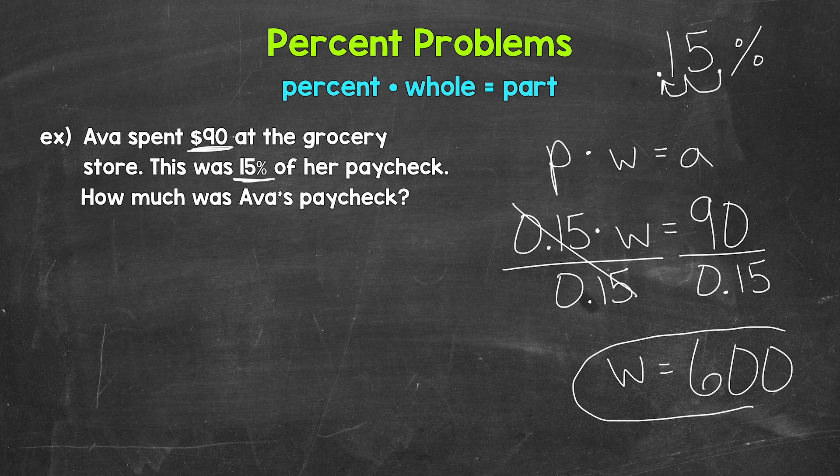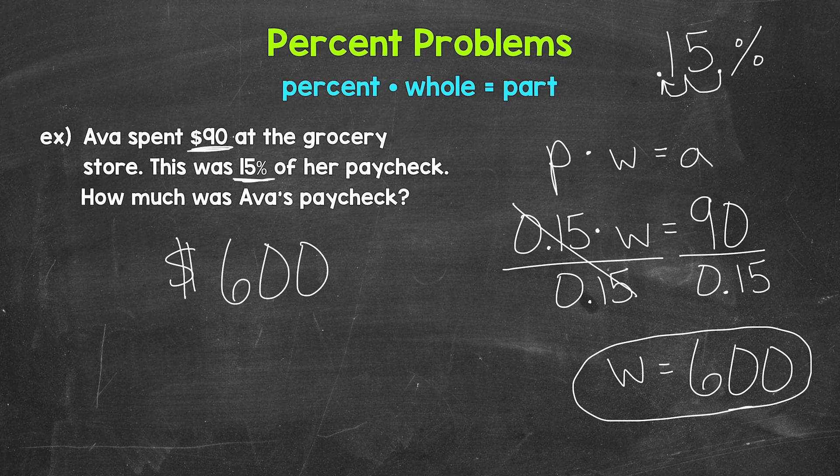So the whole equals 600. Now going back to the original question, how much was Ava's paycheck? Well, Ava's paycheck was 600 dollars.